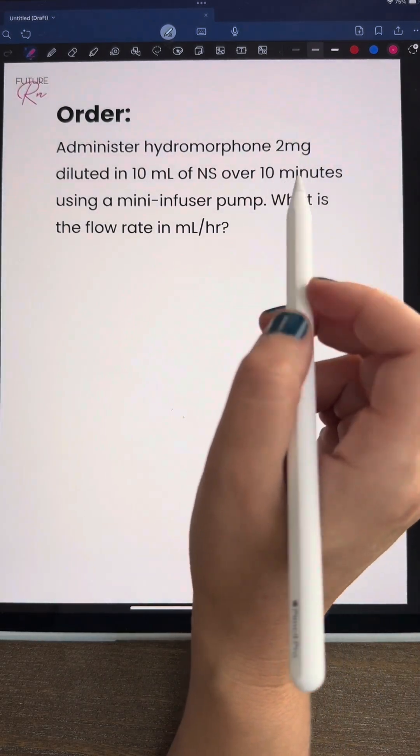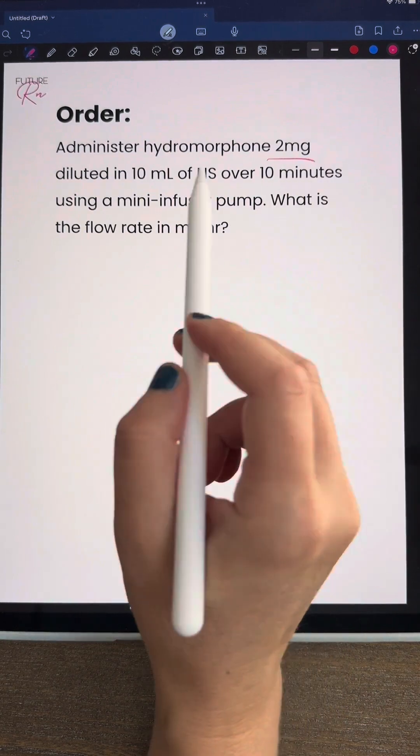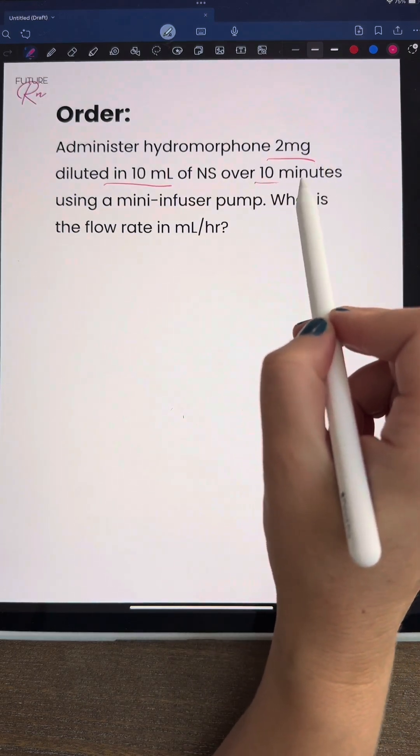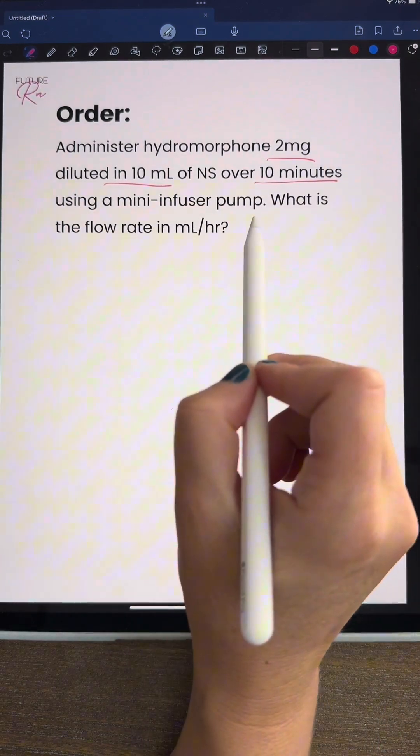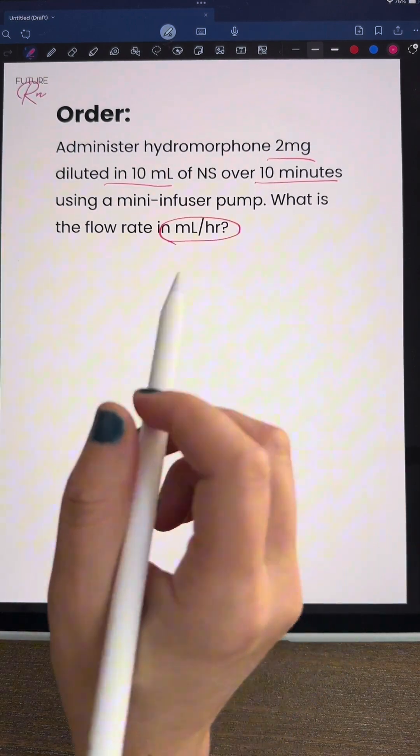Let's do this dosage calculation using dimensional analysis. We're going to administer hydromorphone 2 milligrams diluted in 10 milliliters of normal saline over 10 minutes using a mini-infuser pump. What is our flow rate going to be in milliliters per hour?